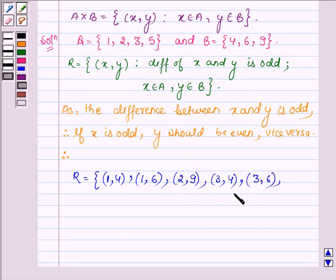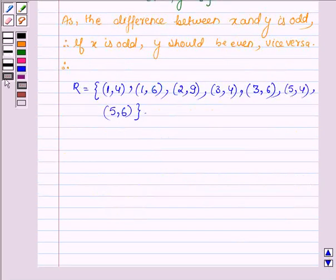And then we have 5 which is again an odd number. The even numbers are 4 and 6. So this is the relation R which is the subset of the Cartesian product A cross B.